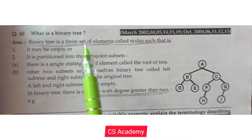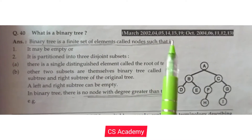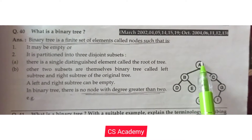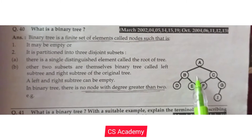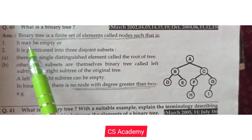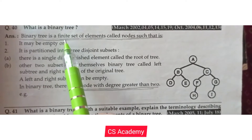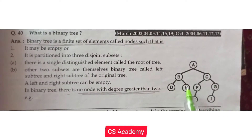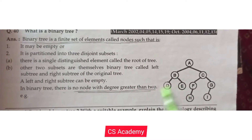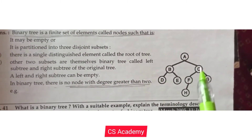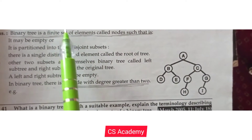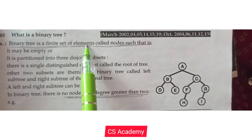A binary tree is a finite set of elements called nodes. Here, A, B, and C are the nodes. The binary tree has a finite set of nodes. It may be empty, or it may have data. The data is also important, but a binary tree is defined as a finite set of elements.